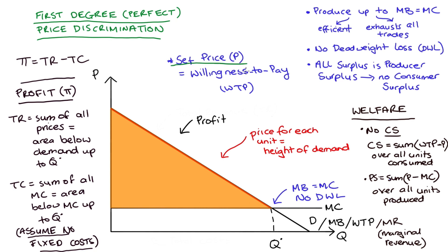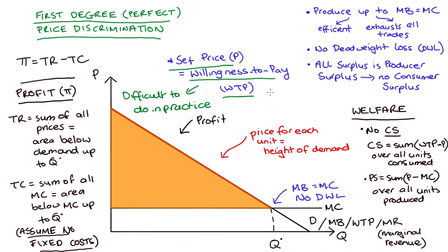One thing to add about this model of pricing is that it's really hard for firms to implement perfectly. In particular, it's hard to gauge what the maximum willingness to pay for any unit of a good is exactly. One strategy worth mentioning is auctions — consumers bid against each other, the price increases, and those with a lower willingness to pay drop out. The consumer left at the end gets the good and has the highest willingness to pay, and hopefully the price they pay is close to that consumer's maximum willingness to pay. So auctions are a strategy that tries to gauge the highest willingness to pay for each unit sold.